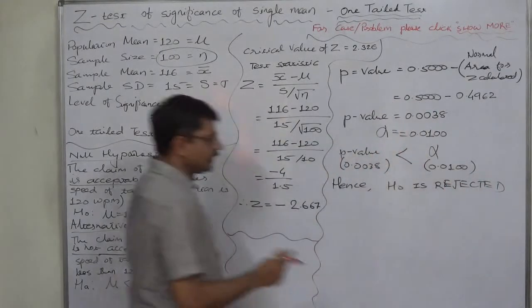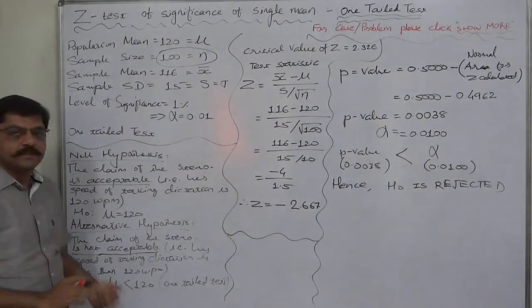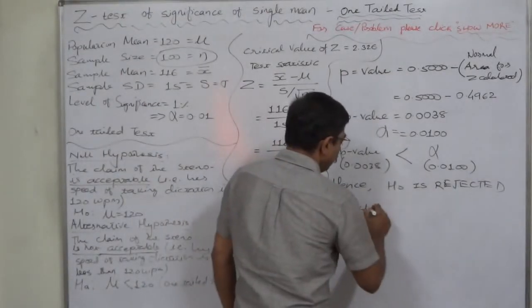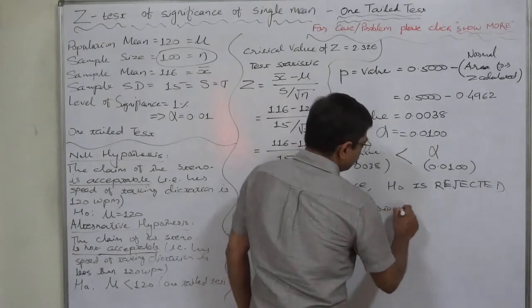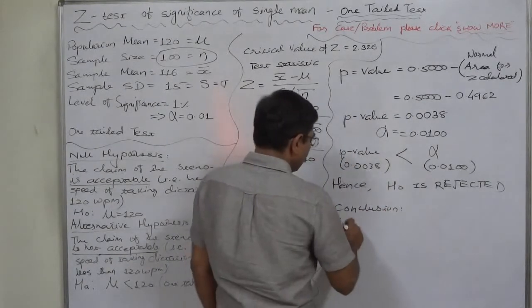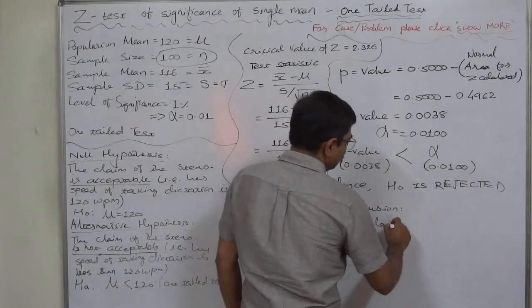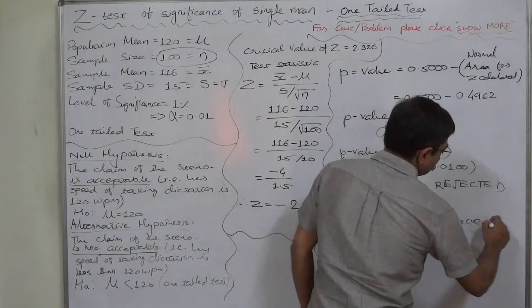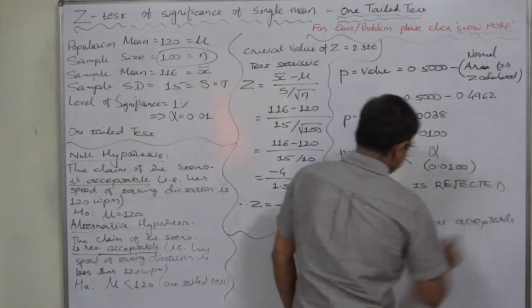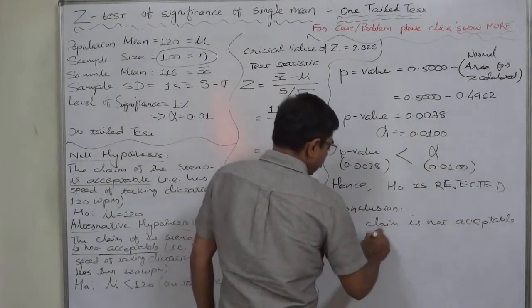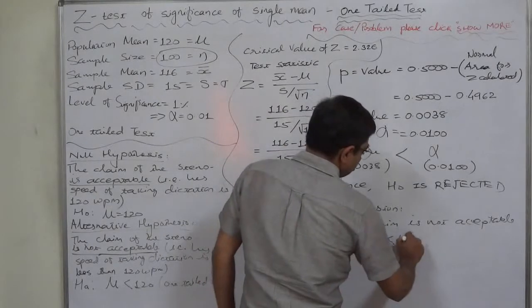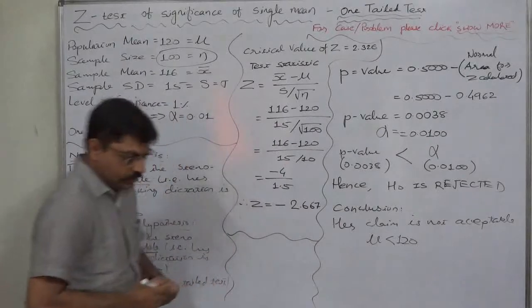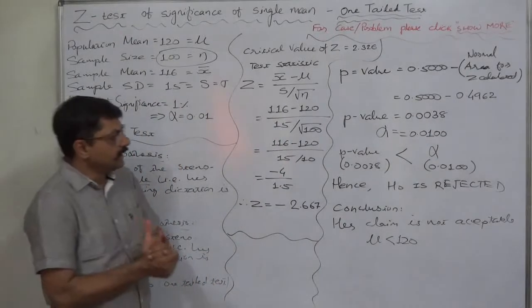When we reject the null hypothesis, we can say that we accept the alternative hypothesis. So our conclusion will be according to the alternative hypothesis, that is, our claim is not acceptable. That means our average speed is less than 120 words per minute. So this is the p-value method.